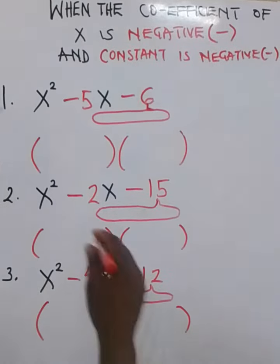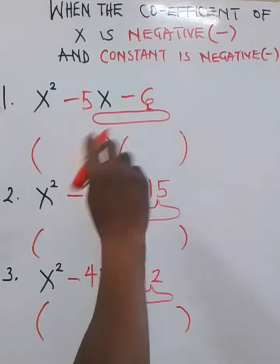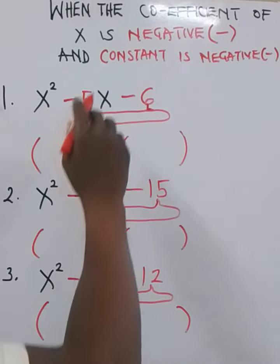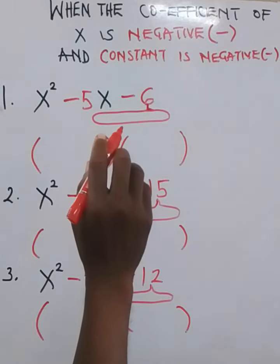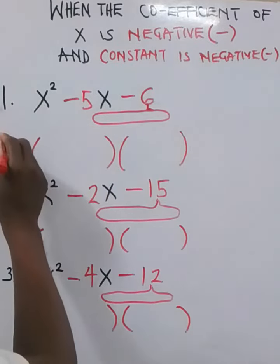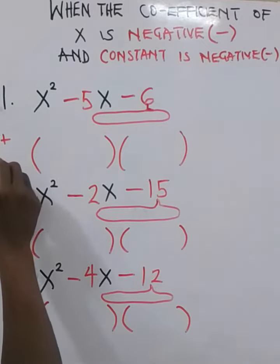Good day. Let's see this factoring of quadratic expression when the coefficient of x is negative and the constant is negative. One thing you have to have at the back of your mind is that the two factors, one must be positive and the other one must be negative.